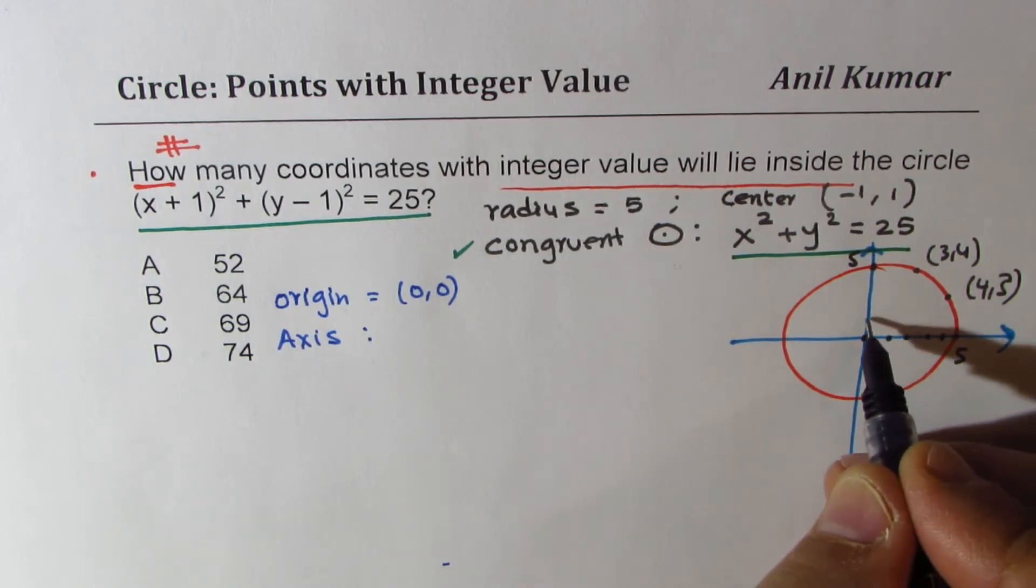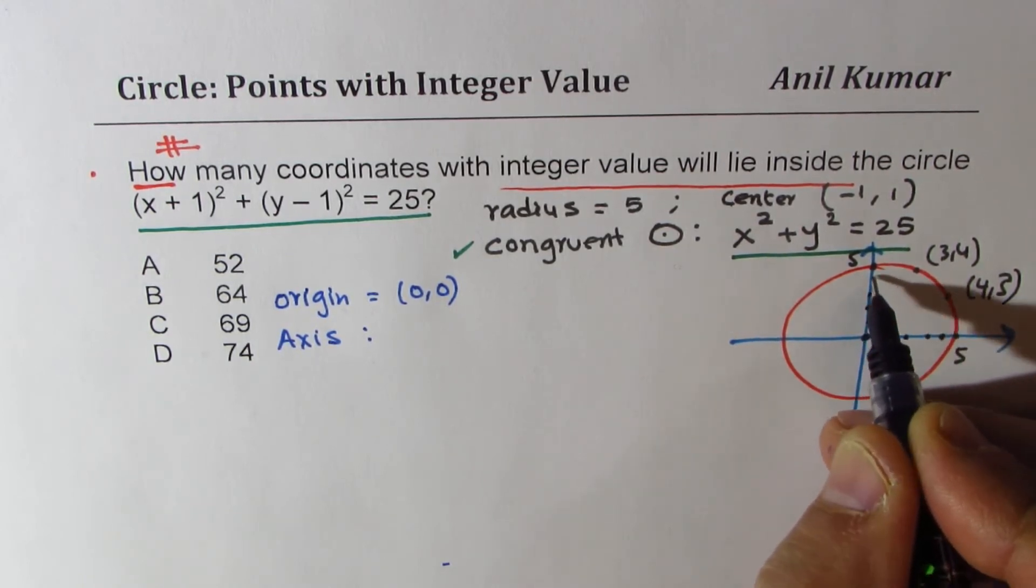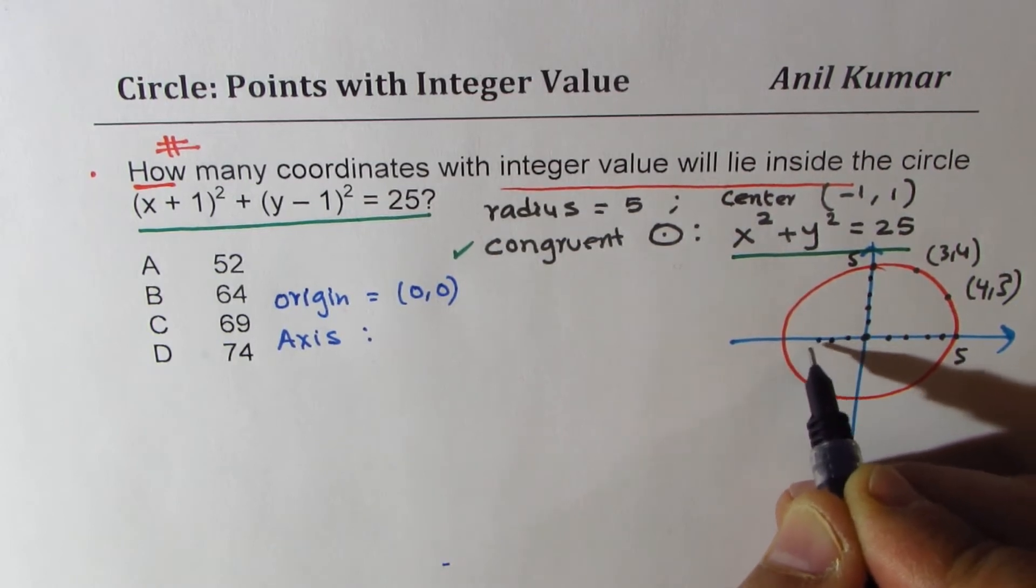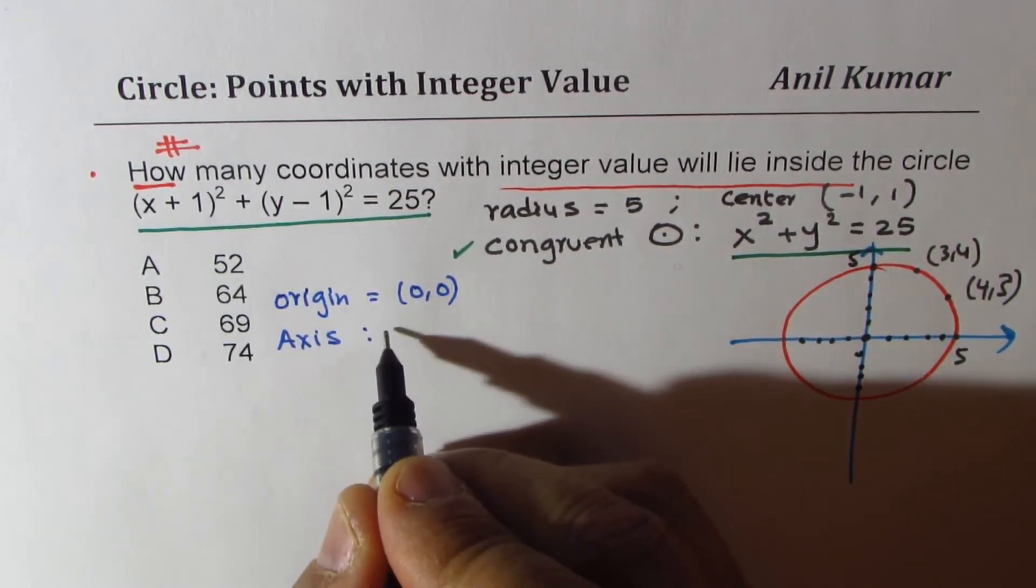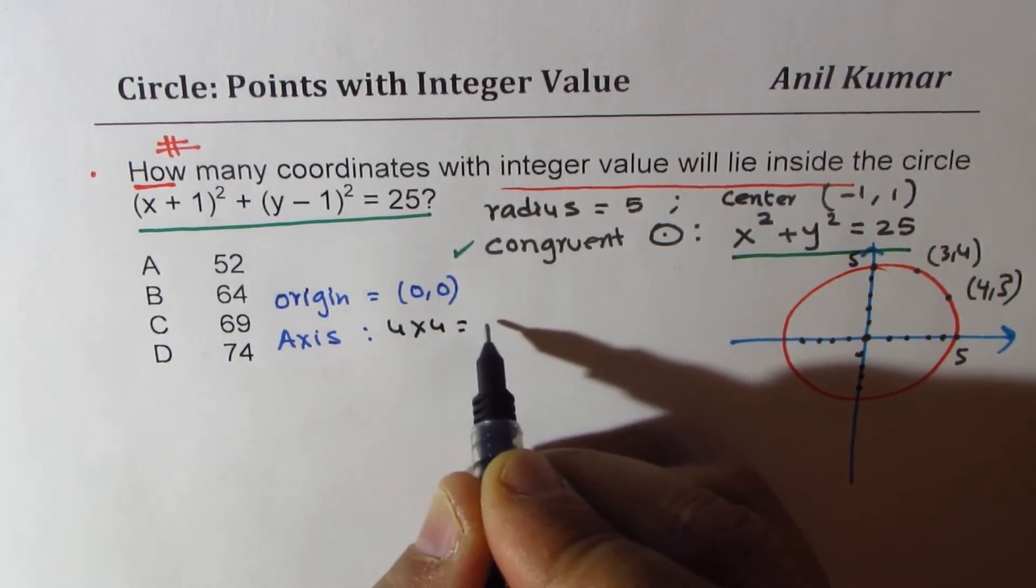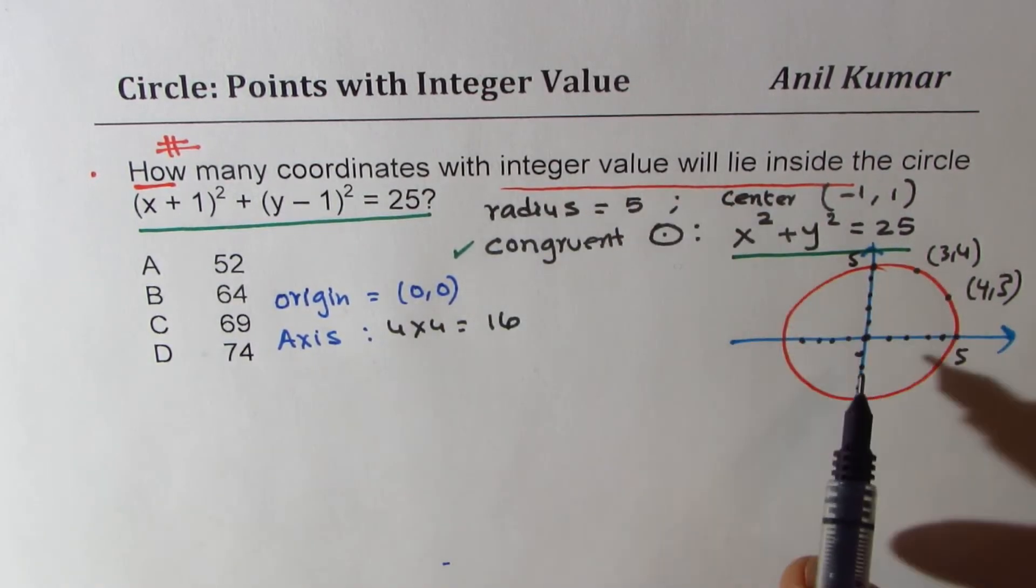Now in each axis, we have 1, 2, 3, and 4. Fifth one is not there. So 1, 2, 3, and 4, 1, 2, 3, and 4, 1, 2, 3, and 4. So we have 4 times 4, which are 16 points, integer values, right?